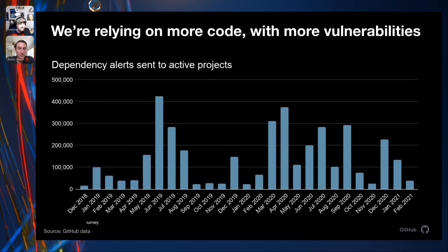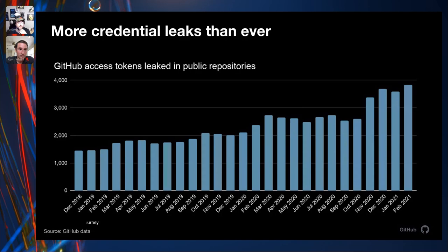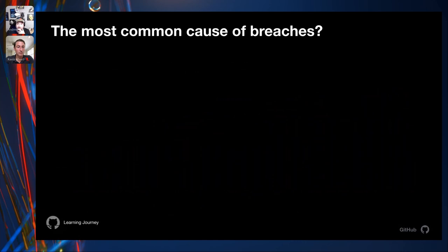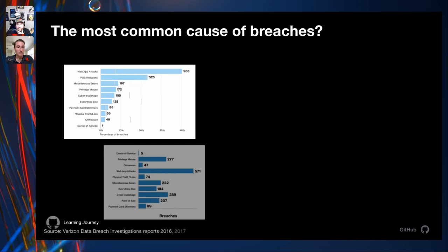Looking at dependency alerts sent out to active projects: we're actually relying on more code with more vulnerabilities in it. There's been a 39% increase in 2020 versus 2019. We're addressing three key areas: code scanning with SAST, dependency and open source hygiene via SCA, and committing secrets into code. The advent of GitHub, open source, and community-driven collaboration has made things easier — but there's been approximately a 60% increase over time in credentials being leaked in public repositories.